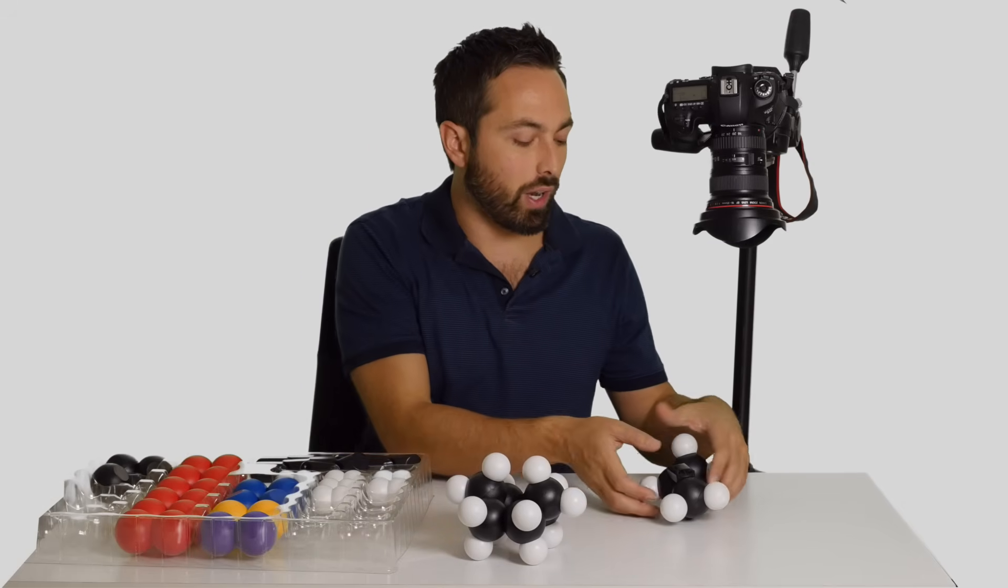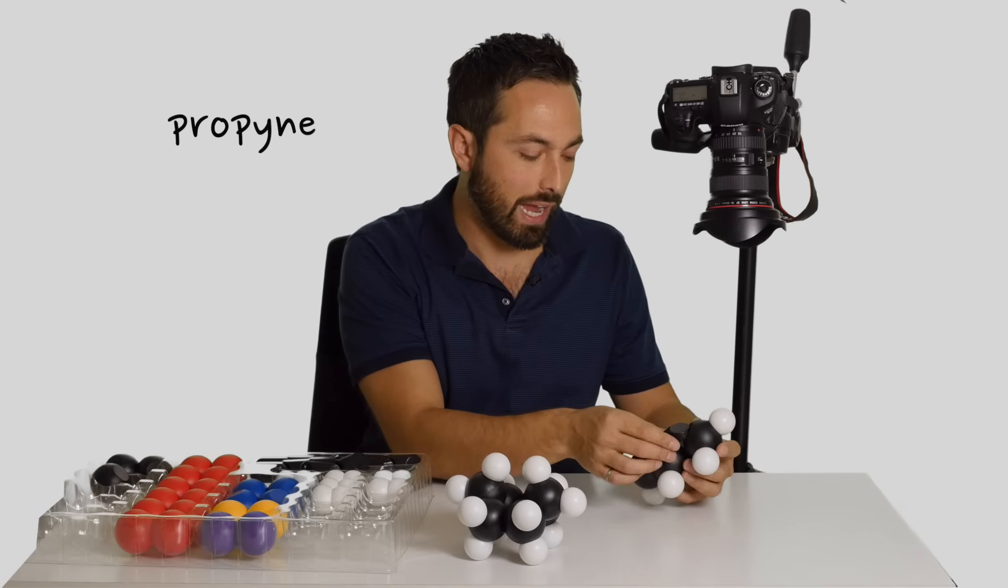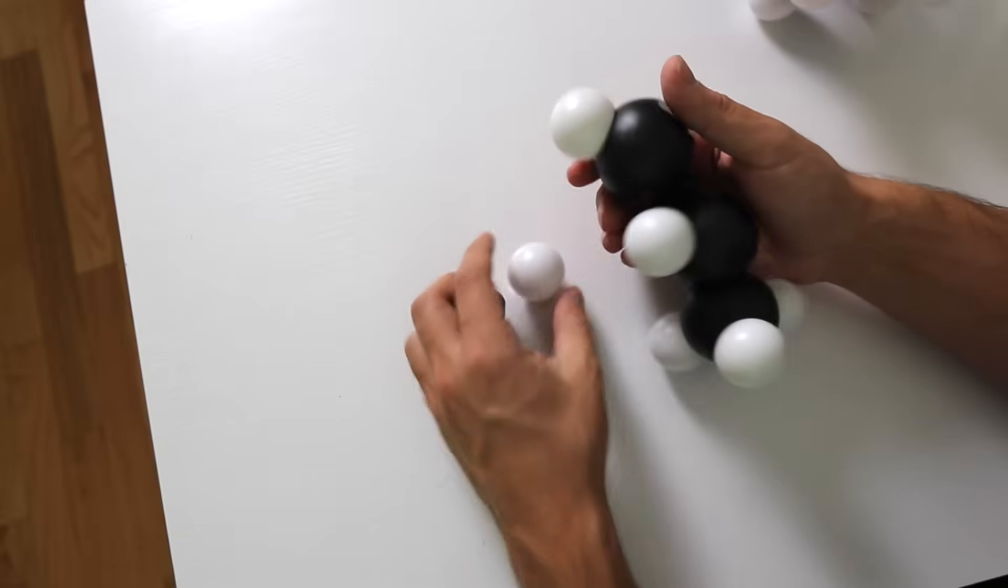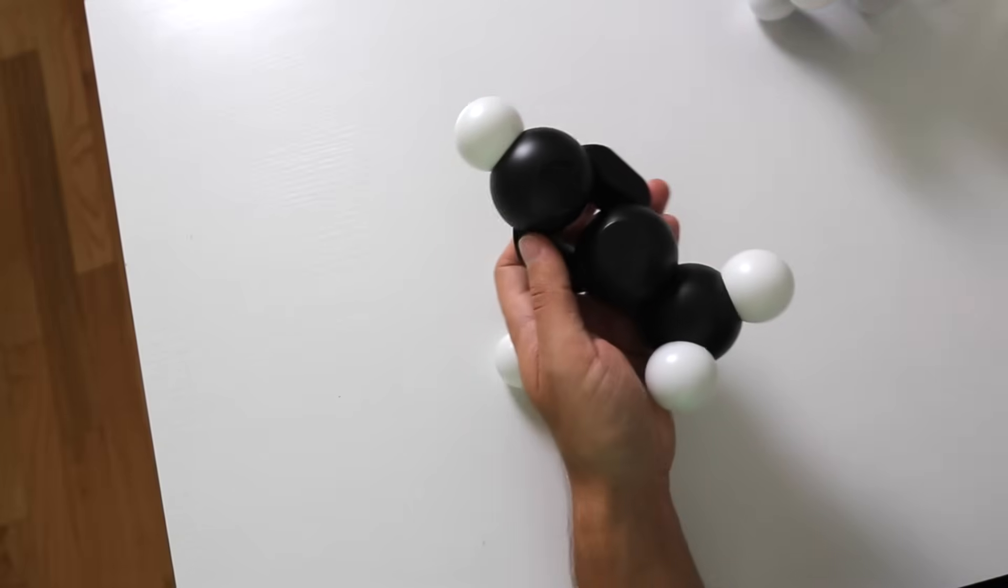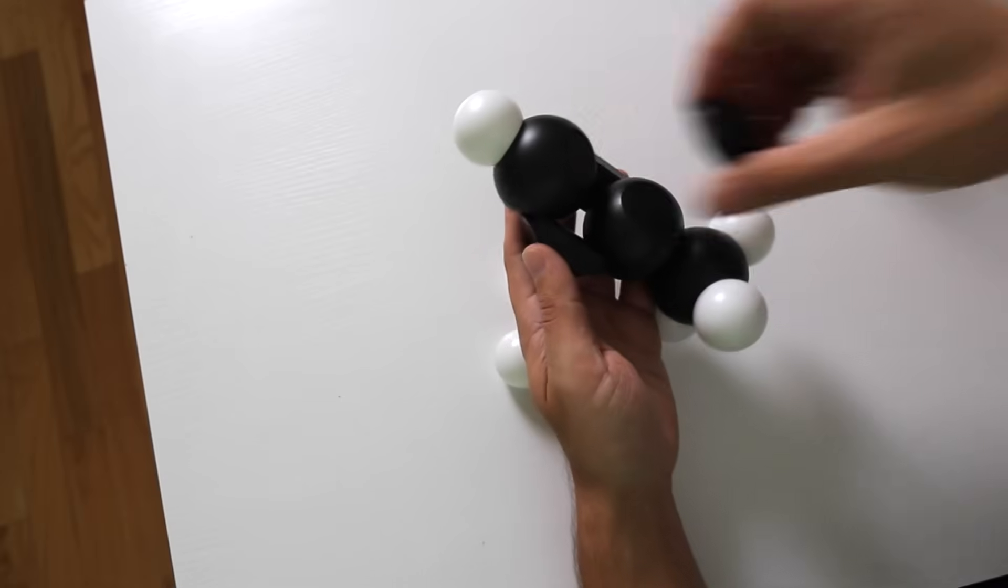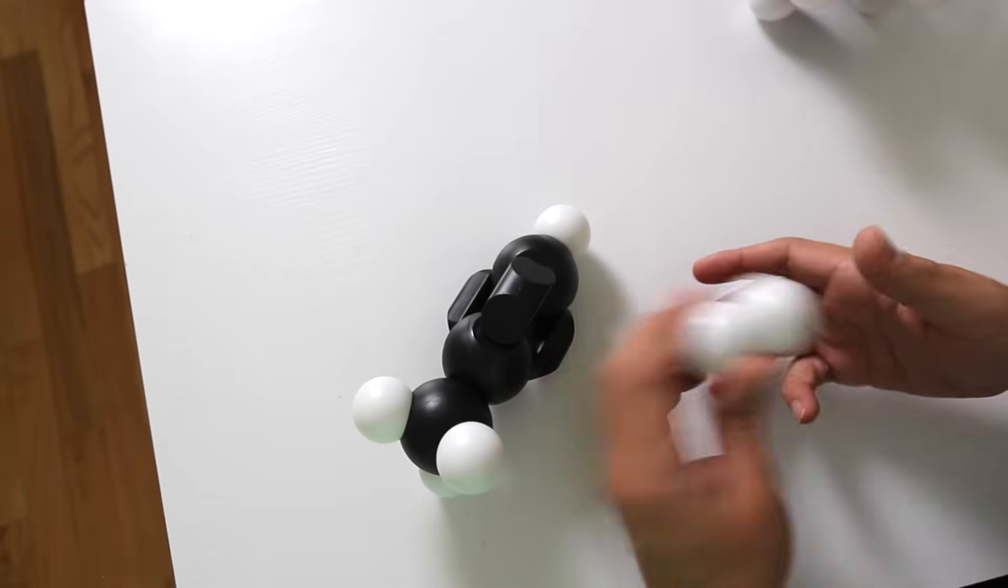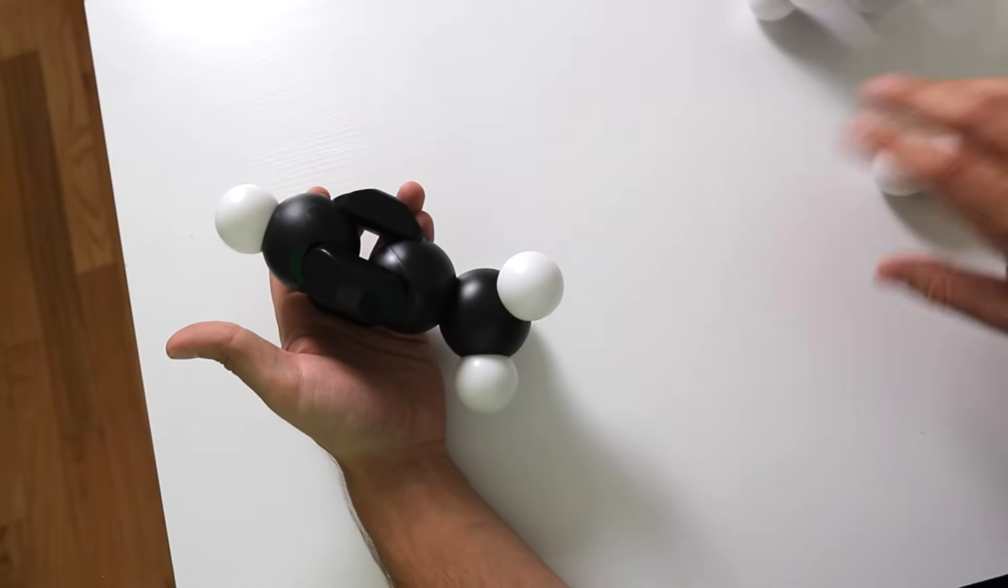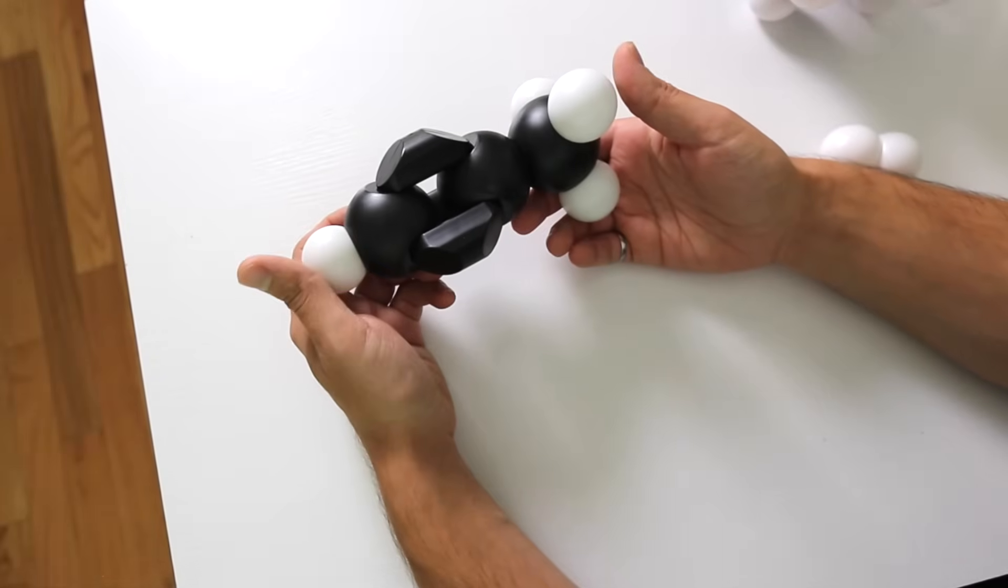But instead, why don't we make propyne? So if we want to add a triple bond in here, so now we have these carbons forming a triple bond with each other. This is what we call an alkyne. Again, fewer hydrogens are possible to bond on here because we have triple bonded the carbons together. So this would be propyne.